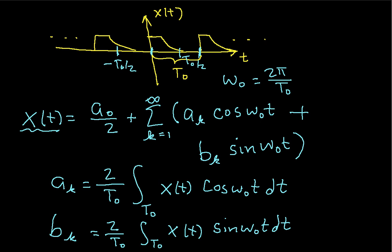So, and a0 is, I believe, 1 over—2 over t0. This is going to be a0—integral over t0 x of t dt. So, a0 is essentially the dc value of the signal.